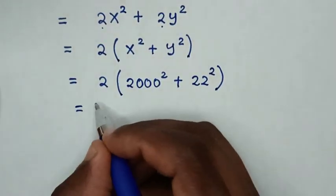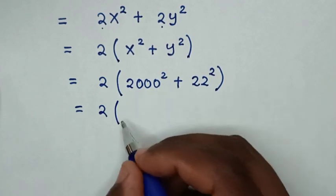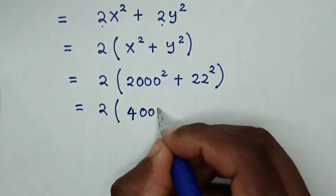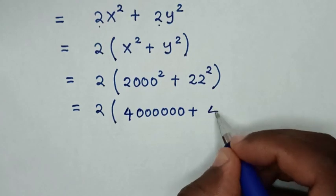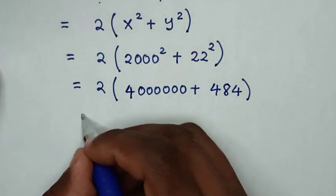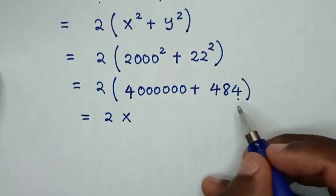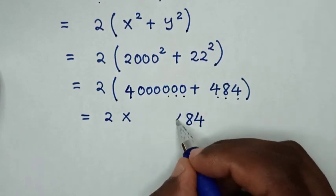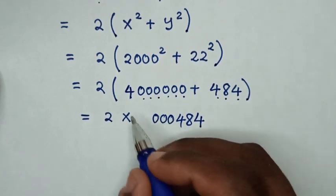Then it will be equal to 2 times: 2000 squared is 4 followed by 6 zeros (4,000,000), plus 22 squared is 484. So inside the bracket we have 4,000,000 plus 484.